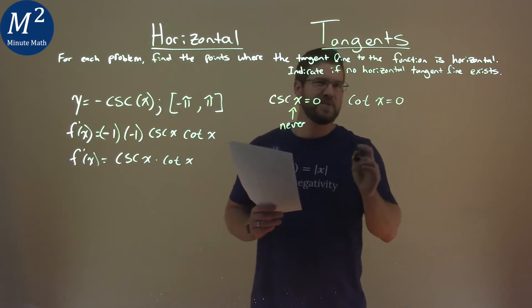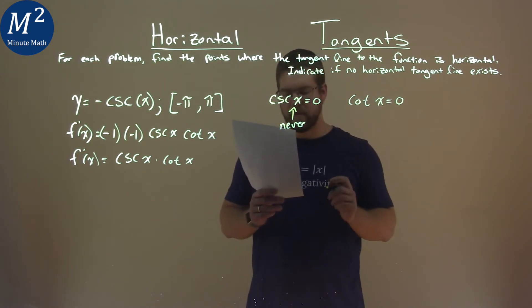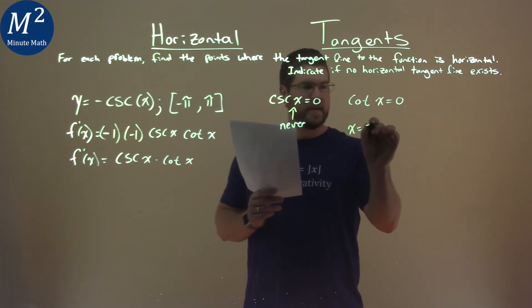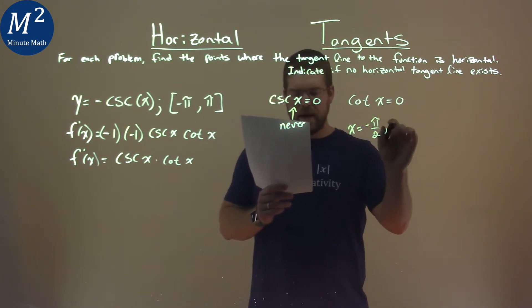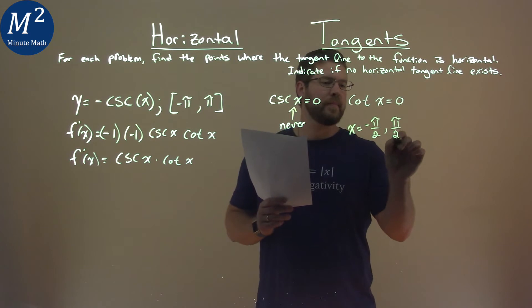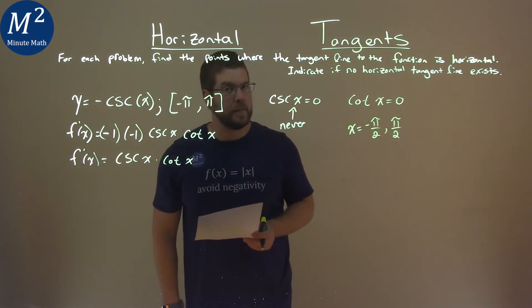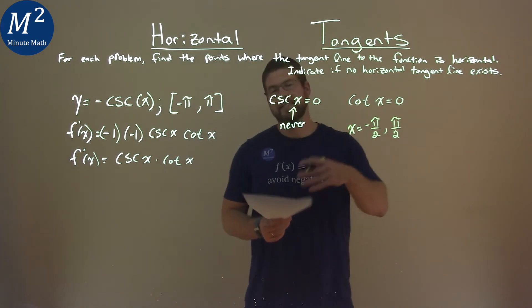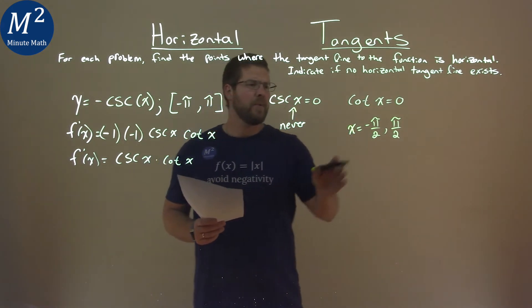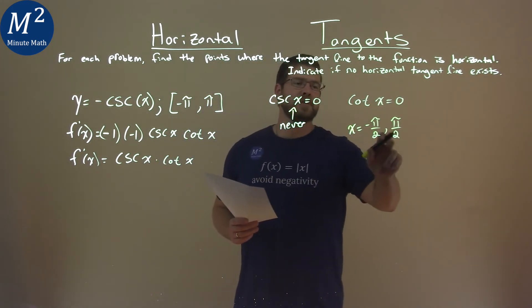Cotangent of x equals 0 twice, if we remember this. It happens twice at x equals negative pi over 2 and pi over 2. Now, when I say twice, it's within our interval of negative pi to pi. We know it hits infinitely many times, right? And within the interval, it's at negative pi over 2 and pi over 2.